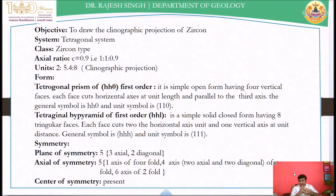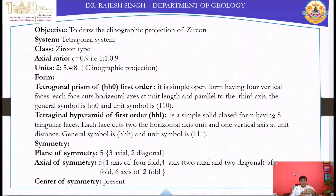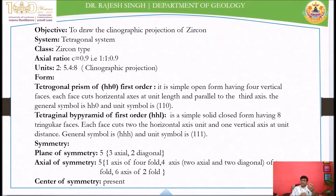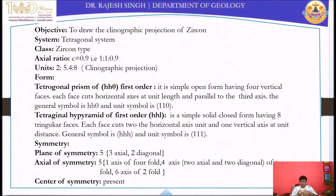In the tetragonal system, the A1 and A2 axes may have the same length but the A3 axis will be either longer or shorter. So the axis ratio changes in comparison to the isometric system. In the isometric system all axes have ratio 1:1:1, but here it is 1:1:0.9, considering the C axis as the shorter one. For clinographic projection, the ratio used is 1 to 2.7 to 4, with some adjustment in the C axis.